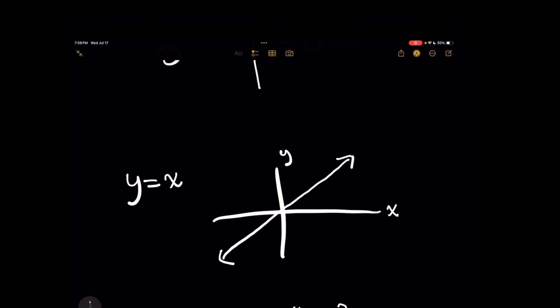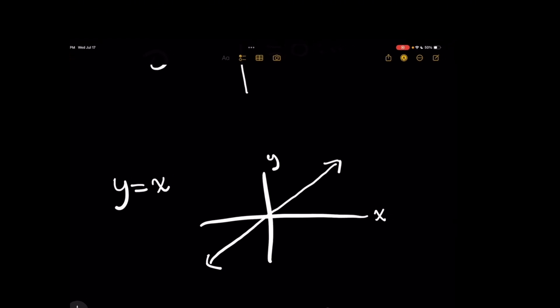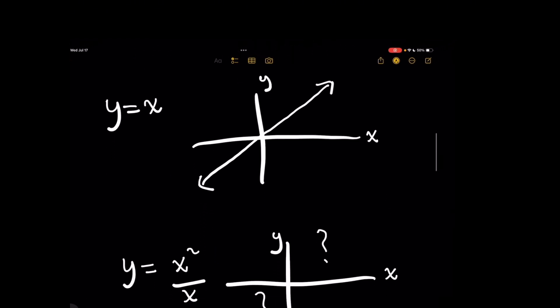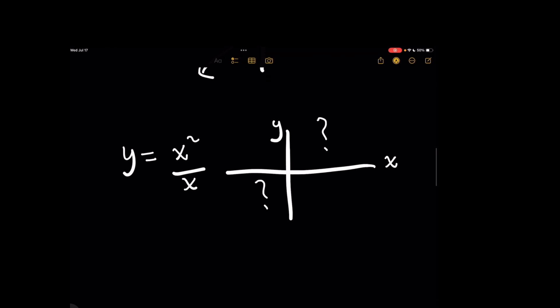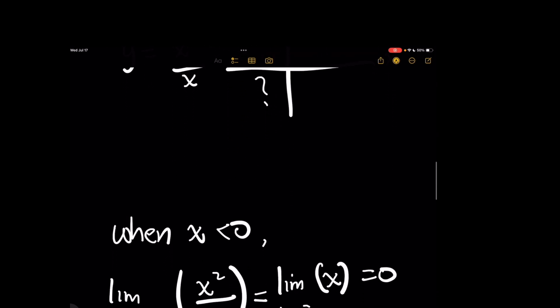But when you want to graph x squared over x, it gets a little trickier. We can't just simplify the expression. But knowing that we cannot divide by 0 means we need to treat that graph a little differently. So what we want to figure out is what that graph is going to look at. And in case you haven't already seen it, I have other videos on limits.